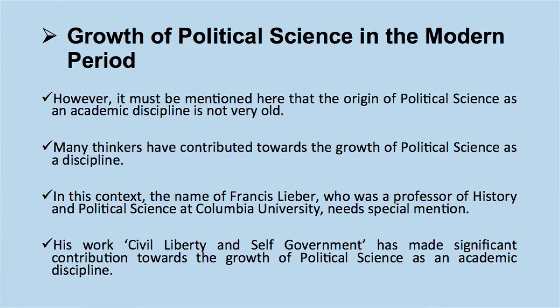We now come to the growth of political science in the modern period. The origin of political science as an academic discipline is not very old. Many thinkers have contributed towards its growth. In this context, the name of Francis Leiber, who was a professor of history and political science at Columbia University, needs special mention. His work, Civil Liberty and Self-Government, made a significant contribution towards the growth of political science as an academic discipline.